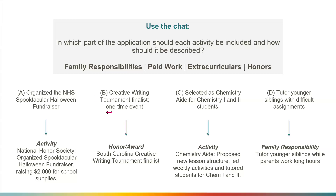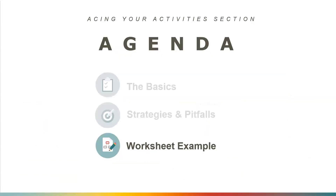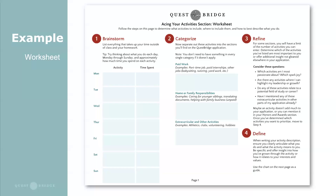Now we're going to combine everything we've learned into filling out our given worksheet. The worksheet is divided into four steps: brainstorming, categorizing, refining, and defining. We're going to start out by listing everything that takes up your time outside of the classroom. For example: band practice, picking up siblings, cooking, helping with homework, video games, French club, movie nights, tutoring, work, canvassing for a local political campaign, and hanging out with friends on Saturday.